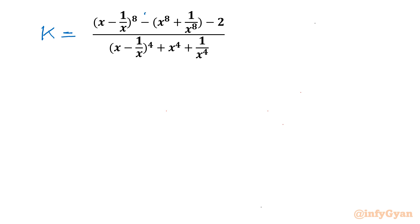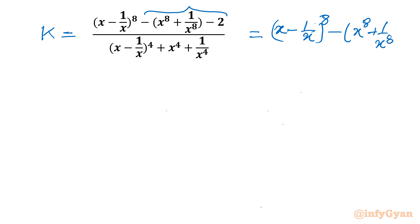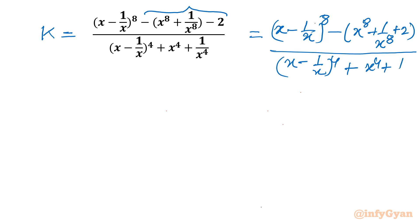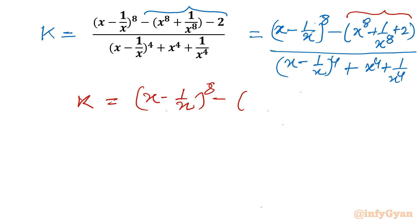I will begin by taking minus common from the two terms in the numerator. So it will be (x - 1/x)^8 minus, in brackets, (x^8 + 1/x^8 + 2), divided by (x - 1/x)^4 + (x^4 + 1/x^4). You can see this bracket is one perfect square identity. So k equals (x - 1/x)^8 minus (x^4 + 1/x^4)^2.